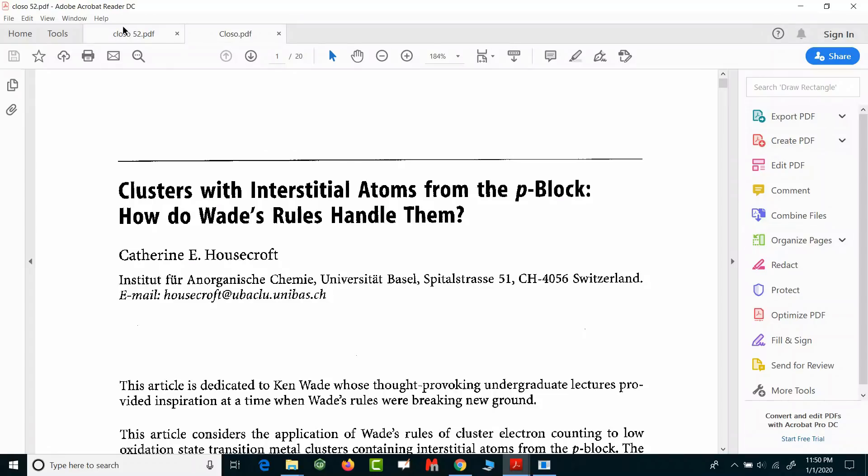There is one article that was published in 2018 in International Journal of Chemistry, a Canada-based publisher. Here also if you see the structure Co6(CO)13N-, serial number 11, it is mentioned as 14n+2, total number of electrons 86. The classification is given as closo.